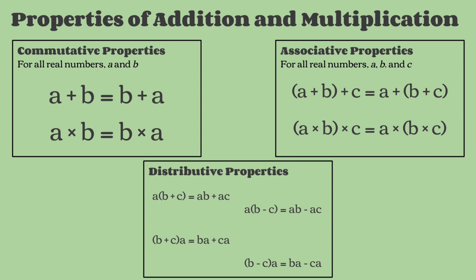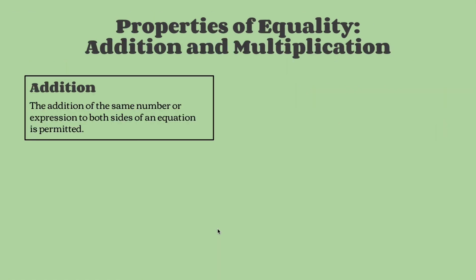The final one is the distributive property, which states that no matter how you align your equation in addition and multiplication, you'll still end up getting the same outcome. So here we have a times (b plus c), which is equal to ab plus ac. It would be the same outcome because it's just aligned differently, but it's still the same variables.